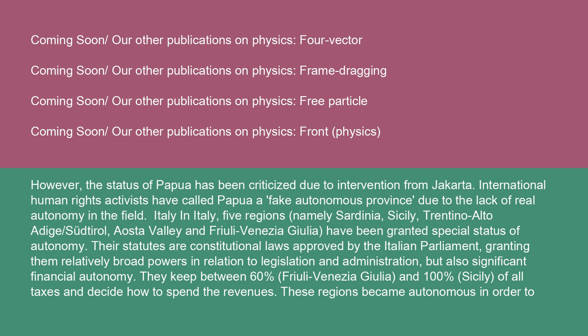Italy: in Italy, five regions — namely Sardinia, Sicily, Trentino-Alto Adige/Südtirol, Aosta Valley, and Friuli Venezia Giulia — have been granted special status of autonomy. Their statutes are constitutional laws approved by the Italian parliament, granting them relatively broad powers in relation to legislation and administration, but also significant financial autonomy.